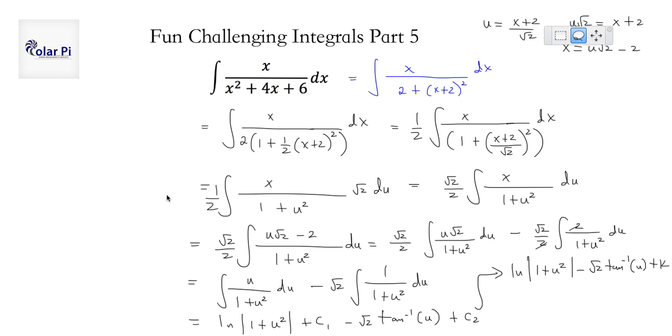And now, finally, this is the final piece. Substituting back for u. So, it's obvious that u squared is going to be x plus 2 quantity squared over 2. So, we write natural log of 1 plus x plus 2 squared over 2, minus root 2 tan inverse of x plus 2 over root 2, and then plus k, and that is our final answer.